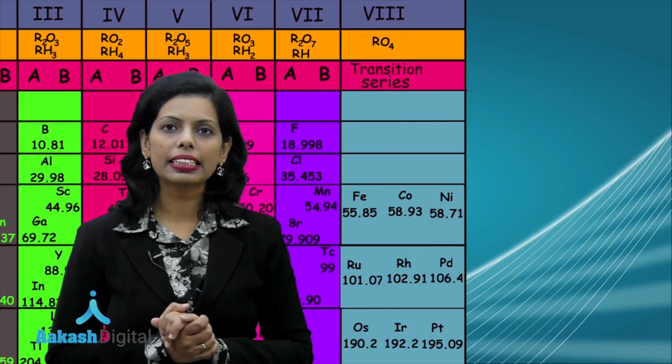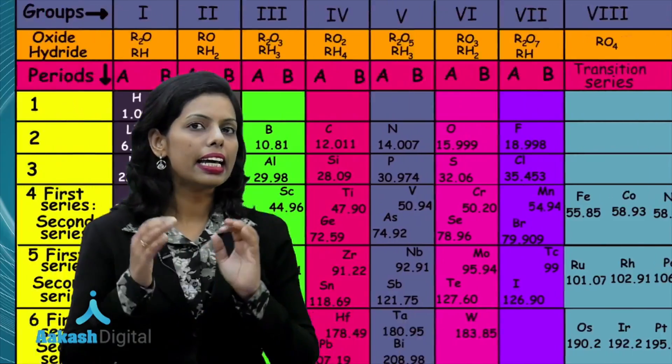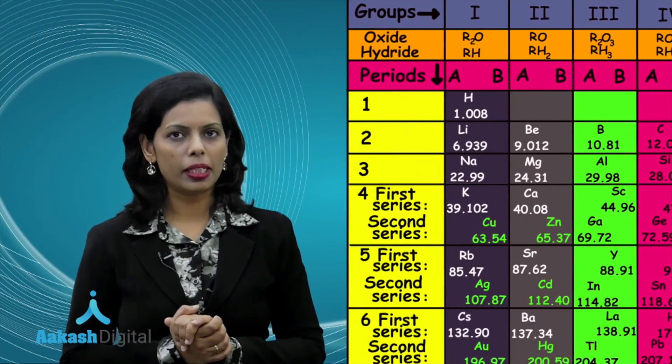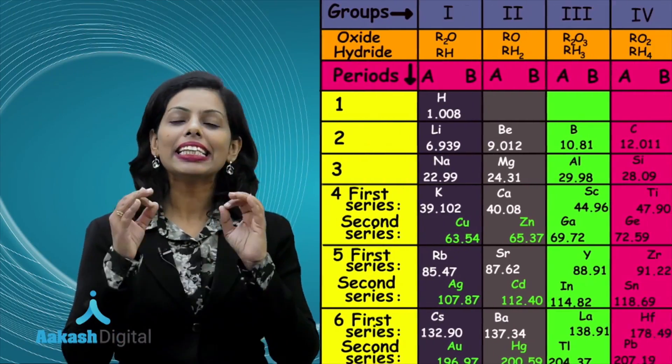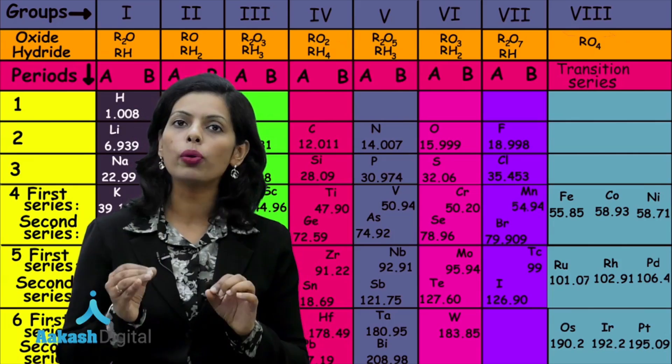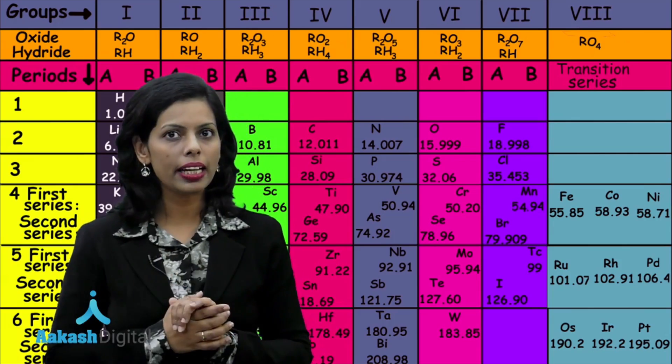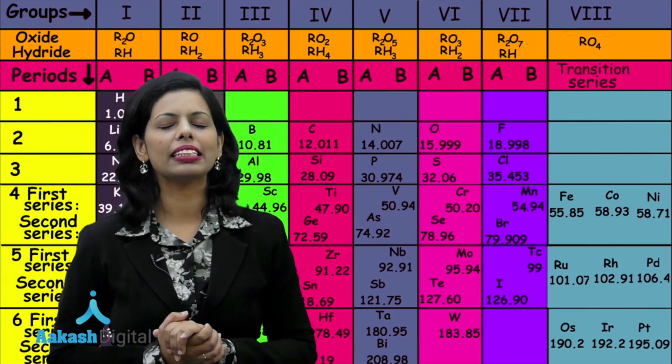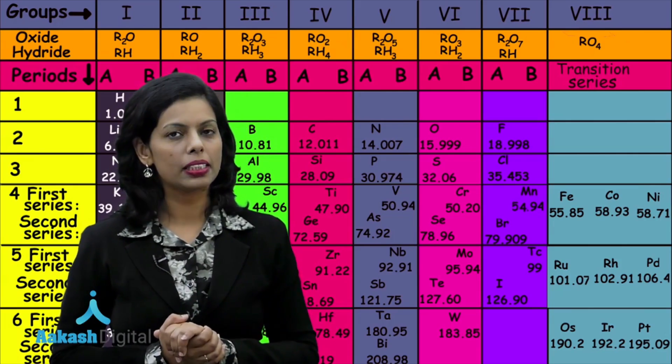Further, we discussed that there are six periods in Mendeleev's periodic table, where elements were following both periodicity as well as atomic masses.